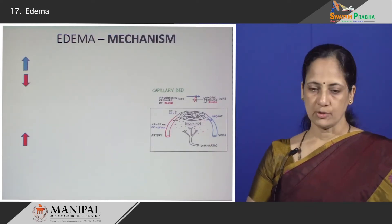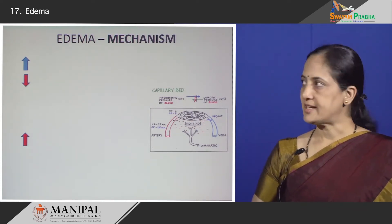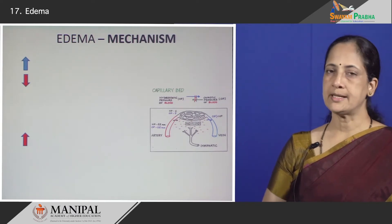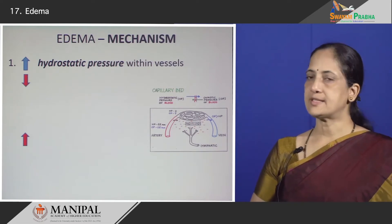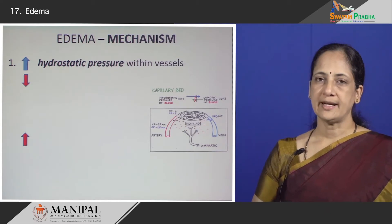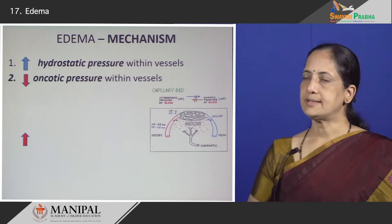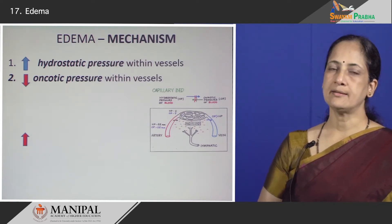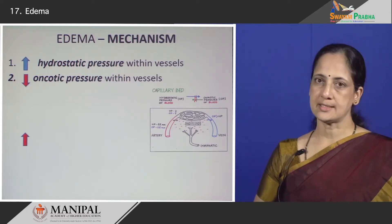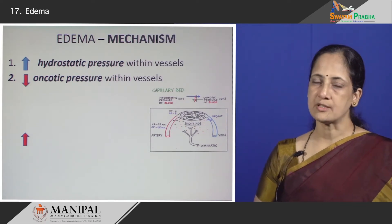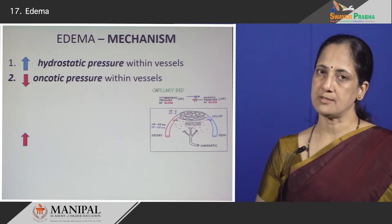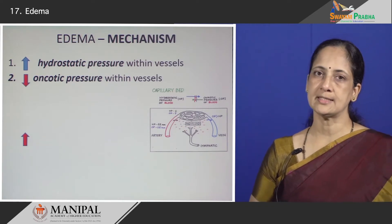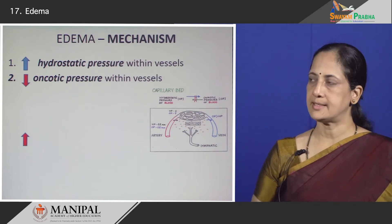How does excess fluid accumulate in the interstitial compartment? It is straightforward if you understand the simple physiological mechanisms. Hydrostatic pressure drives fluid out of the blood vessel into the interstitial compartment, so if the hydrostatic pressure within the vessels increases, more fluid will go into the interstitial compartment. A drop in colloid osmotic pressure in the vessels normally allows fluid to move out; a greater drop causes more fluid to move into the interstitial compartment. For example, albumin is present in the intravascular compartment — if albumin is lost from the circulation through the urine, there is hypoalbuminemia, causing a drop in colloid osmotic pressure and increased migration of fluid into the interstitial compartment, resulting in edema.